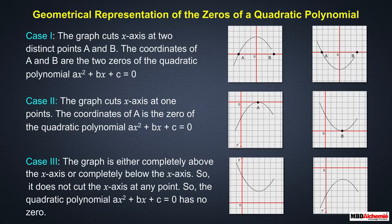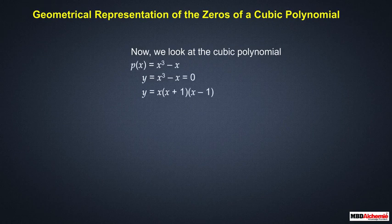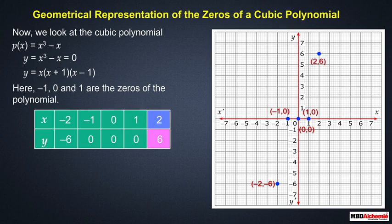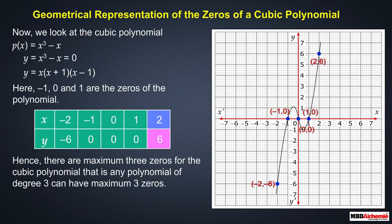A quadratic polynomial can have a maximum of two zeros. For the cubic polynomial p(x) = x³ − x, the zeros are −1, 0, and 1. We draw the graph by tabulating values and see that the graph cuts the x-axis at three points. Therefore, a cubic polynomial can have a maximum of three zeros. In general, any polynomial of degree n can have a maximum of n zeros.